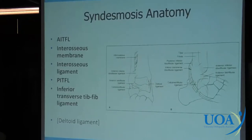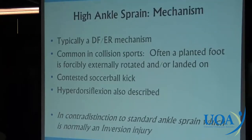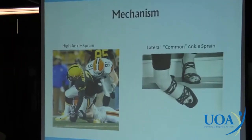The mechanism is most commonly a dorsiflexion external rotation mechanism. Patients will tell you how their ankle was positioned and that will clue you in. It's common in collision sports — often a planted foot that is forcibly externally rotated, or when landed on, the tibia necessarily internally rotates. It can be a contested soccer ball kick; other mechanisms such as hyper-dorsiflexion have been described, even hyper-inversion. Here we see Ben Roethlisberger being landed upon — his foot is externally rotated, his tibia is being internally rotated, there's a dorsiflexion component — much different than a typical lateral ankle sprain.